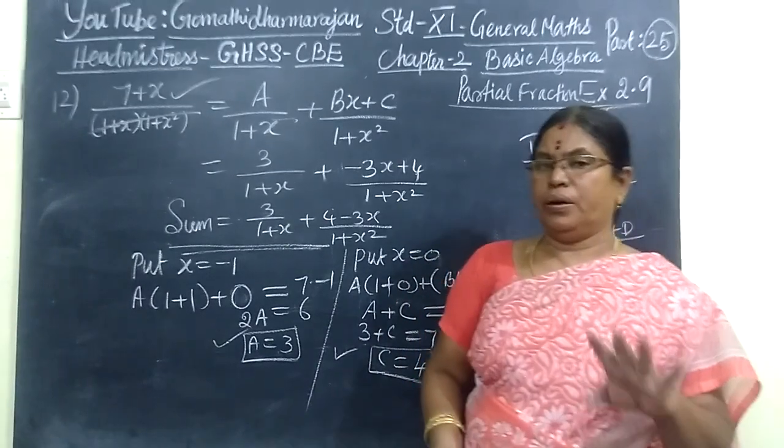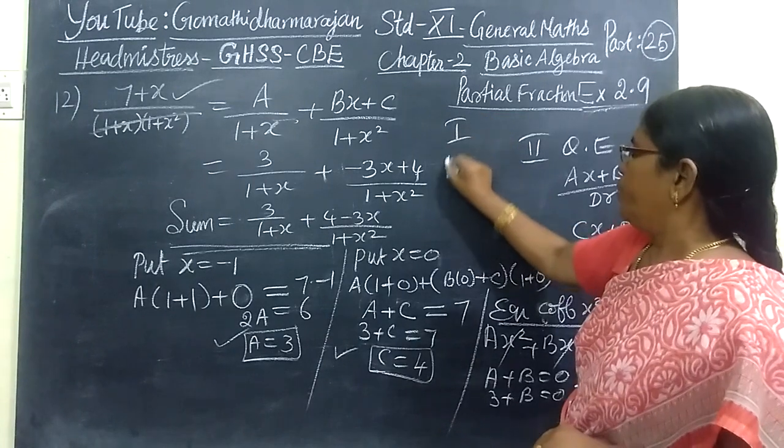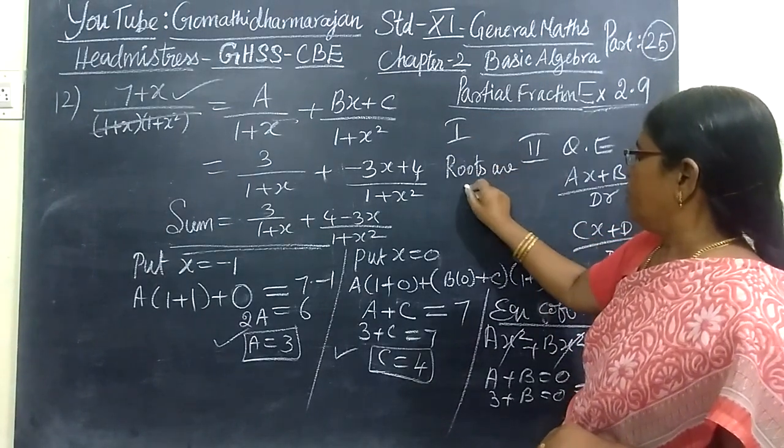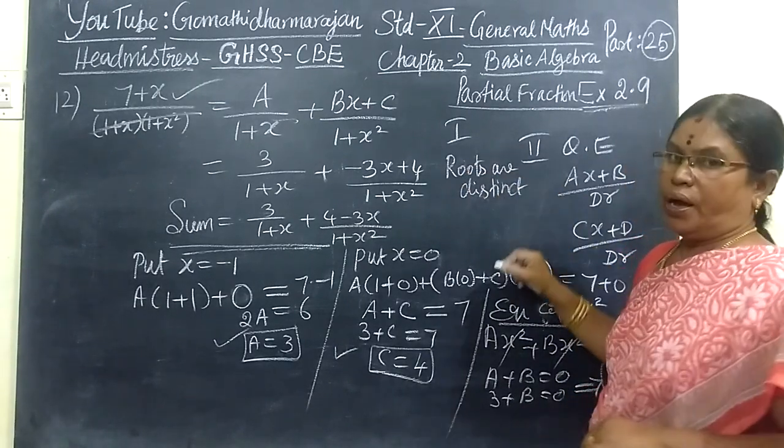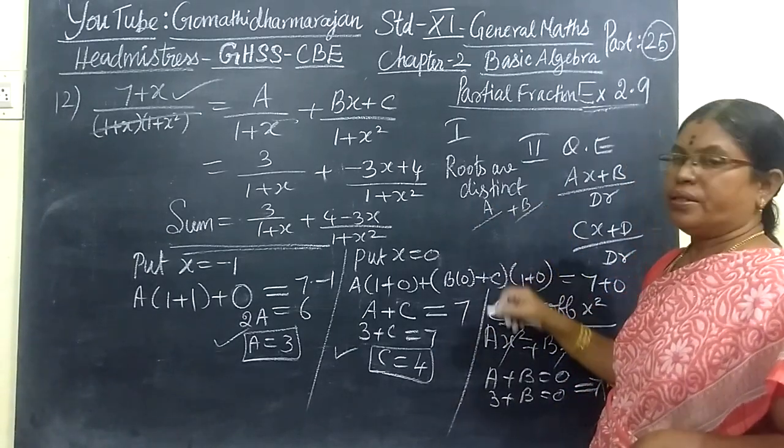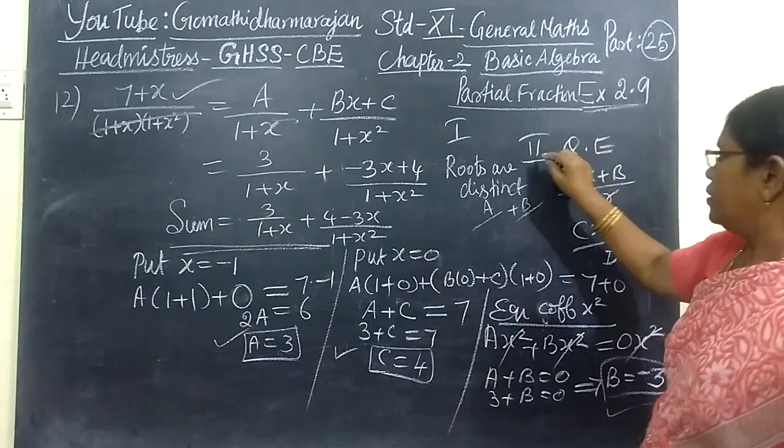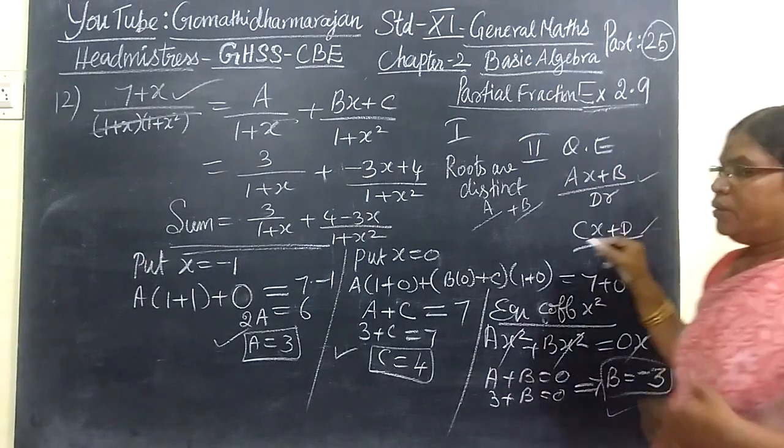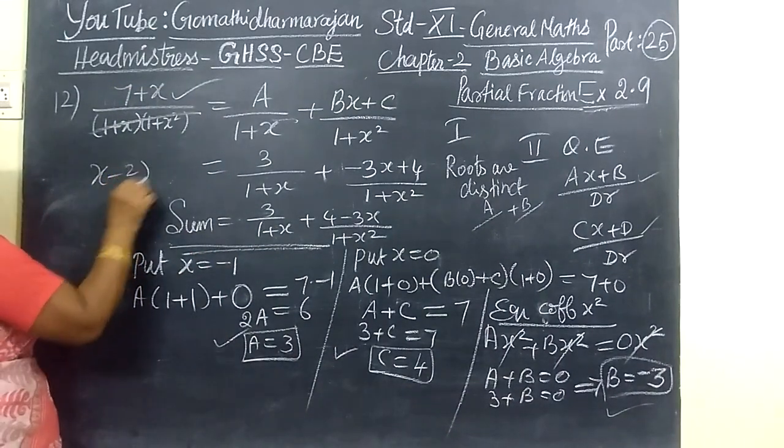You want to keep in mind for rule 1, the rules are different. Rule 1 means the roots are distinct. Where are the rules? A by first factor plus B by second factor or C by third factor. In that way you are writing. Then for the quadratic equation, you write this one.